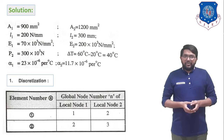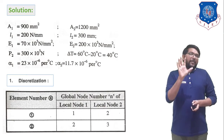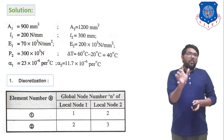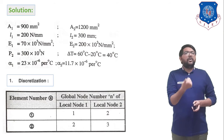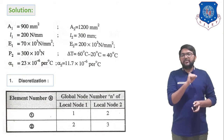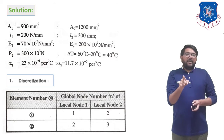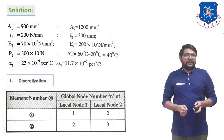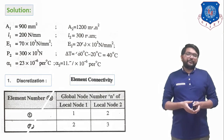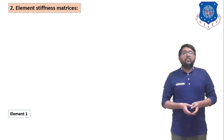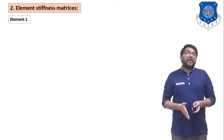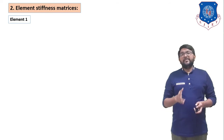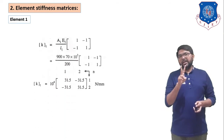Step 1 is the discretization process. Element 1 is mounted between nodes 1 and 2; element 2 is mounted between nodes 2 and 3. We have a total of two elements, so we need to find the element stiffness matrix for each.